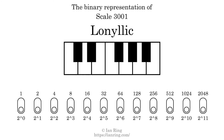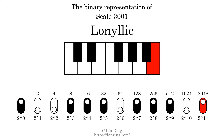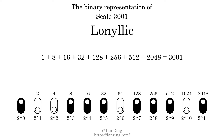The binary representation of this scale is determined by mapping tones of the scale to binary digits. Each binary digit represents a power of 2. To get the scale number, we add the powers of 2 together. The powers of 2 that are present in the scale, all added together, equals 3001. That is why the scale number, in decimal, is 3001.